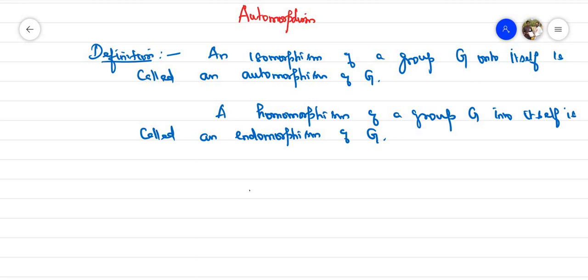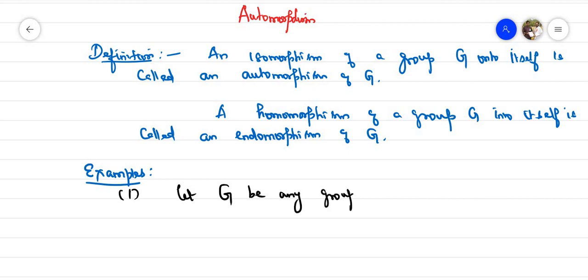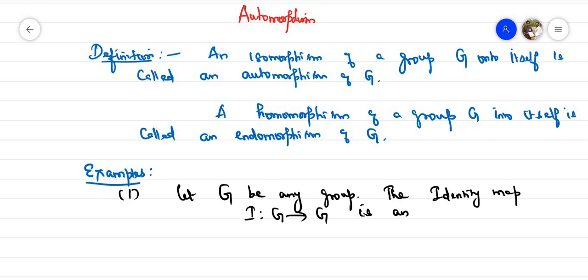Let's give some examples. Number one: let G be any group. Consider the identity map i from G to G. This is an automorphism — it is bijective (one-one and onto), so it is an isomorphism, hence an automorphism.